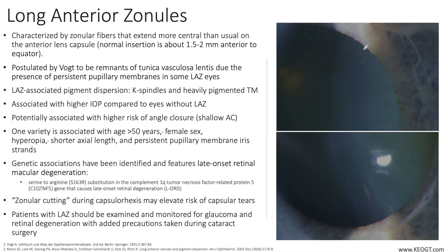You can see here in the photo pigmentation of the zonular fibers along the aspect that is closer to the equator of the lens. You can also see some of the faint longer zonules here that have less pigmentation on them.